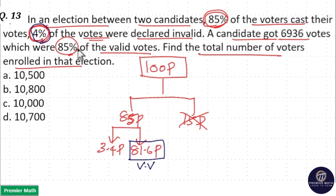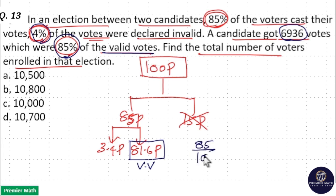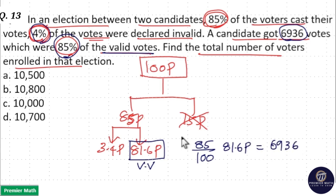The question clearly says 85% of the valid votes equals 6936. That is, 85% of the total valid vote — which is 81.6 parts — is equal to 6936.